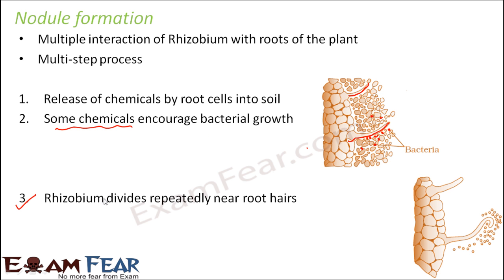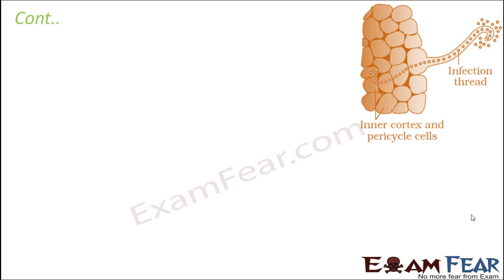If the chemicals encourage rhizobium growth, the rhizobium will start to divide repeatedly near the root hairs. As a result of so much bacterial growth, the root hair tends to get infected by the bacteria all around and the root hair tends to curl. Earlier the root hair was straight, but now it has curled near its tip. Due to this curling, the bacteria gradually enter into the root hair, and the root hair gets infected.